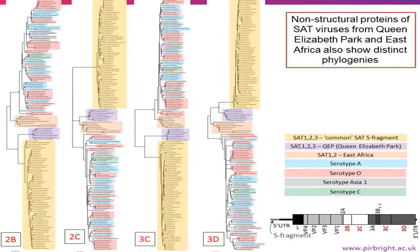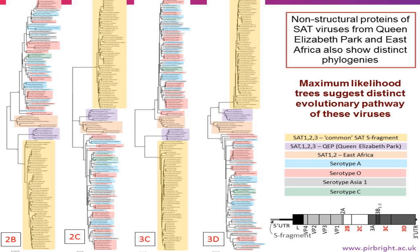They're showing distinct phylogenies. If we look at the rest of the genome — at least the conserved proteins and encoding regions — we find a similar thing to the S fragment, in that these group by geographic location: O/A/C Asia 1 being what we call non-African, the southern African SATs, and then these two different areas in East Africa. These maximum likelihood trees suggest distinct evolutionary pathways for these viruses.